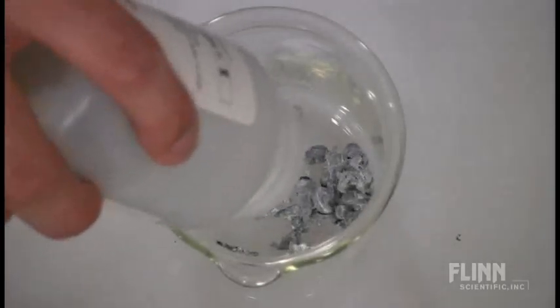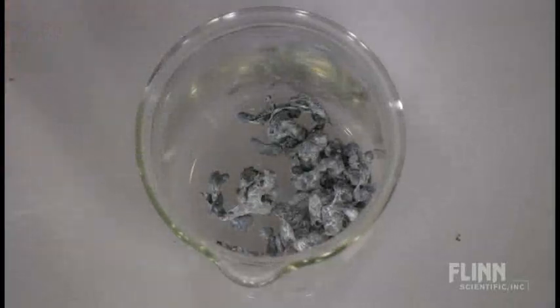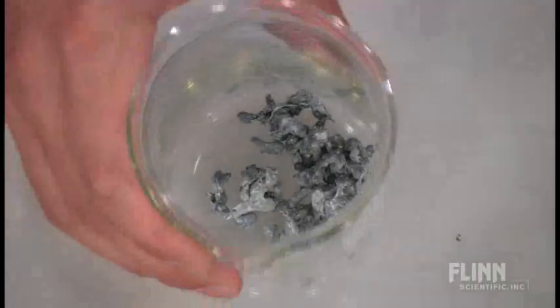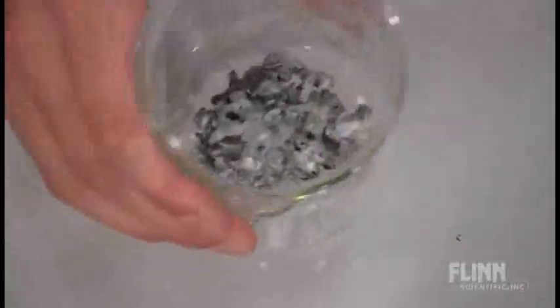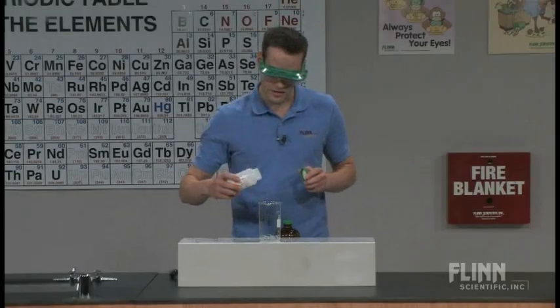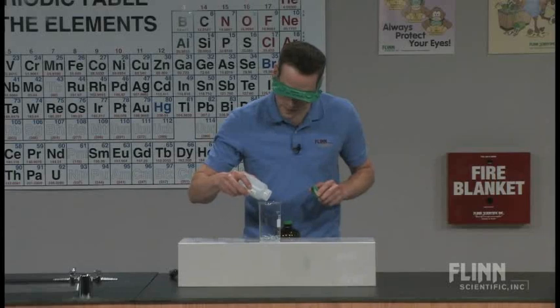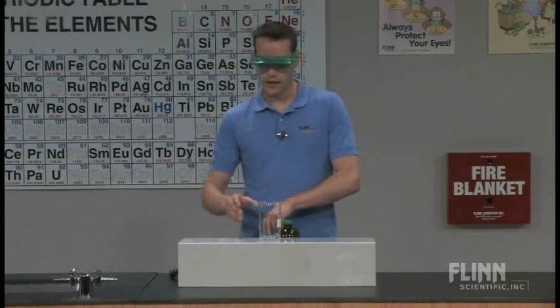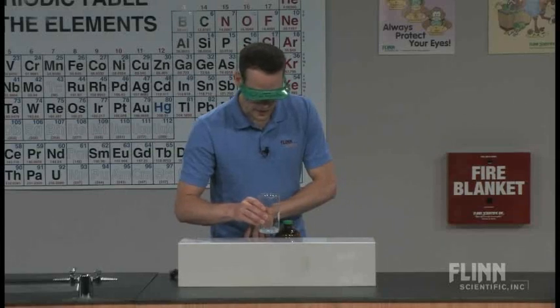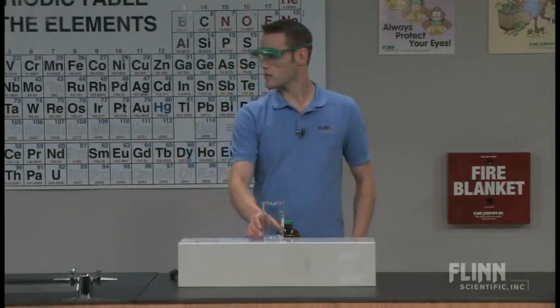Most of the directions usually say to measure this out with a balance. I usually pour directly from the zinc and just make sure that I get a good coating on the bottom of the beaker. So you just want a nice thin layer of zinc on the bottom and add just a few more pieces. And once you have a nice coating, then just pour the tin(II) chloride solution over top.